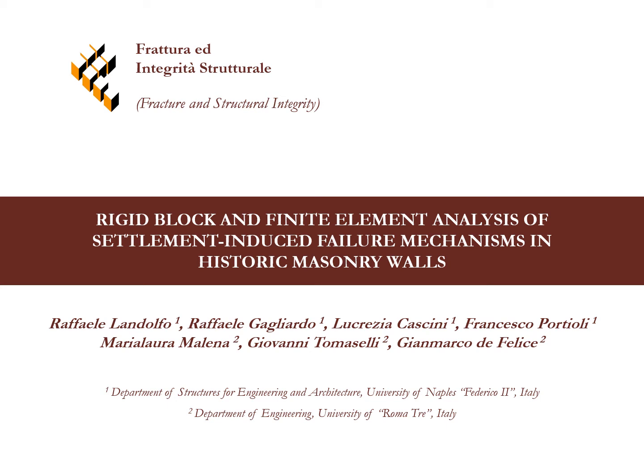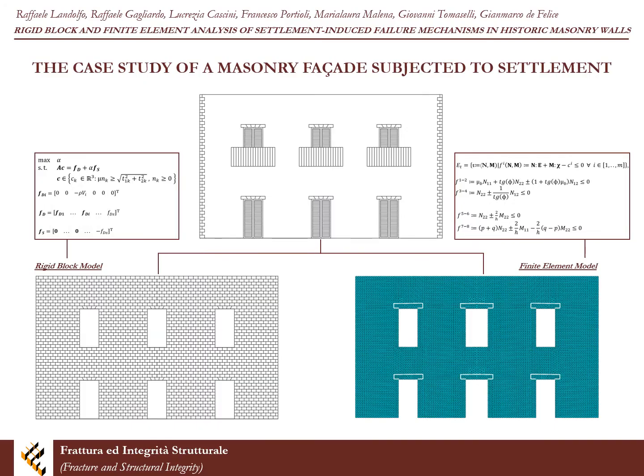The paper is related to the assessment of failure mechanisms of historic masonry structures suffering settlements induced by ground movements. Two numerical strategies are adopted in order to study the influence of some parameters on the cracking of masonry buildings: a discrete rigid block model and a continuous homogenized model. The first approach provides an estimate of the failure pattern of masonry based on the lower bound theorem of limit analysis.